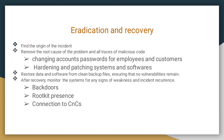Eradication and recovery is the stage for removing the malware or threat that has entered the system. You find the origin of the incident, remove the root cause and all traces of malicious code, update account passwords for employees and customers, and harden and patch systems and software. Then you restore data and software from clean backup files, ensuring no malicious code remains. After recovery, monitor the system for signs of weakness for around 10 days — checking for backdoors, rootkits, or machines still connecting to command-and-control (C2) servers.